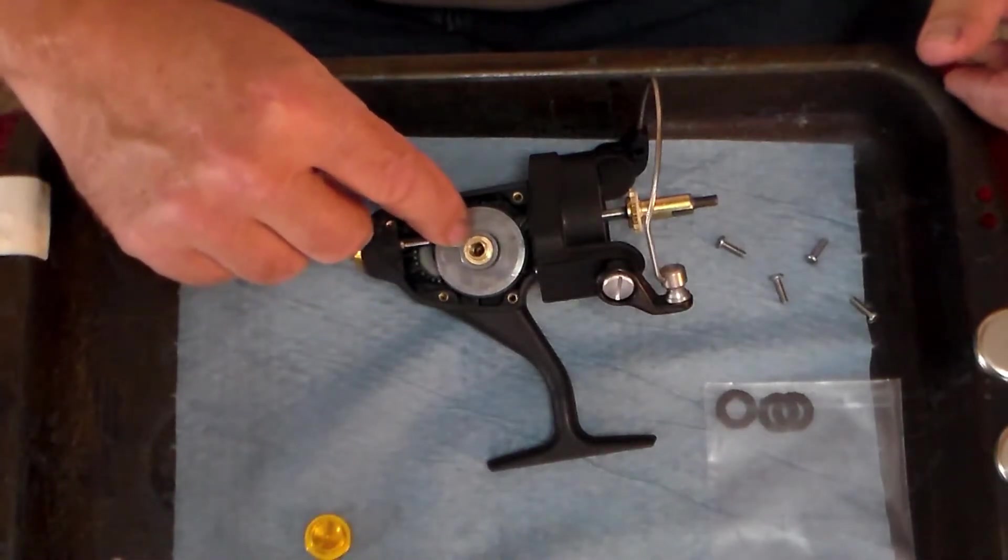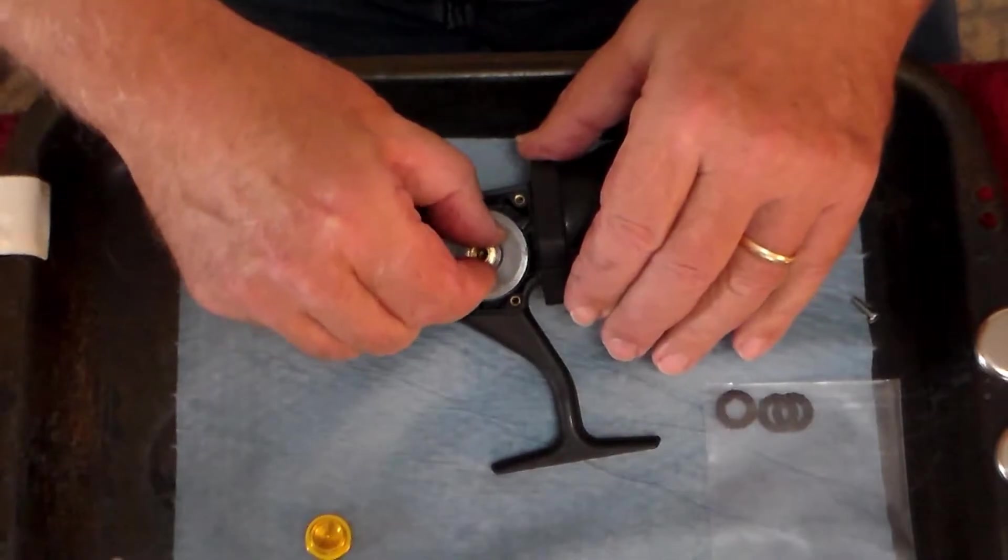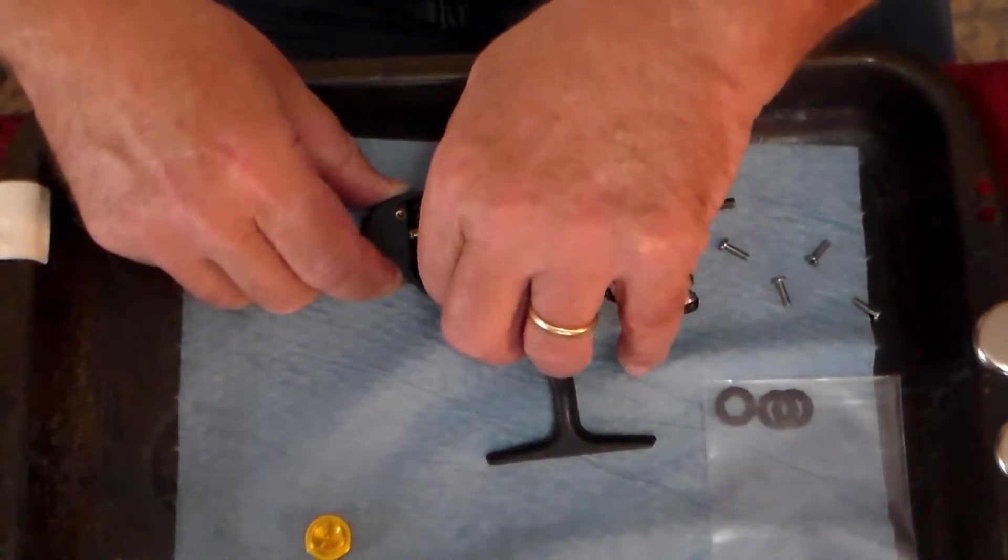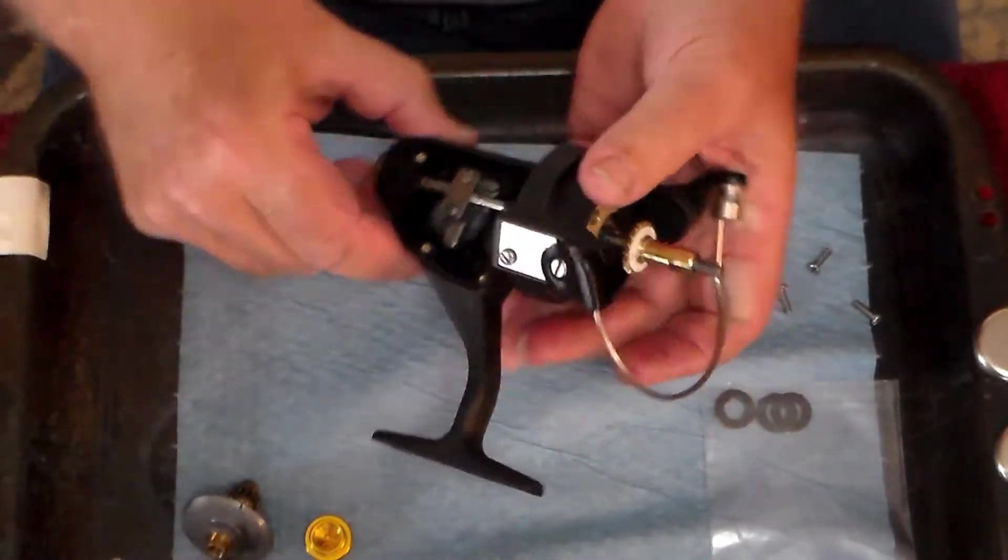And it is a shielded bearing, but it is not a sealed bearing. So we're going to put some oil in it and let that soak in. Make sure it's turning freely. And it does. So we'll set that over to the side.